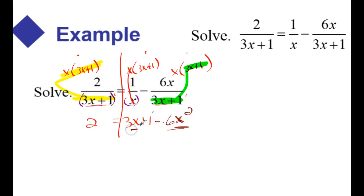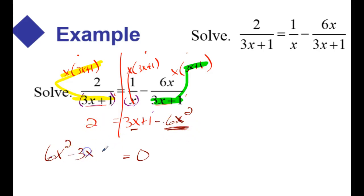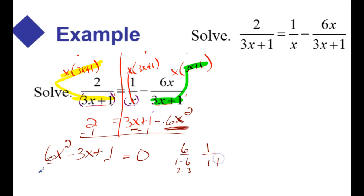Whenever I see an x squared and an x term, usually the goal is to set it equal to 0 and try to factor. I'm going to want to get a positive x squared term, because my factoring rules only work for a leading coefficient being positive. So I'm going to move the negative x squared over to the other side, likewise the negative 3x, and subtract 1 from both sides to set it equal to 0. Now I'm going to look for factors of 6 and 1 that add up to the middle term, which is 3.